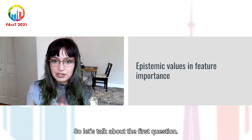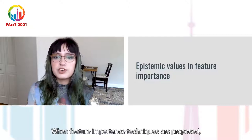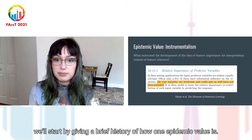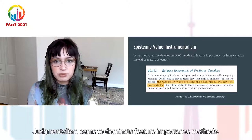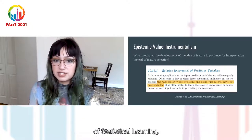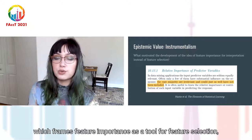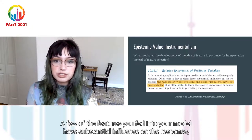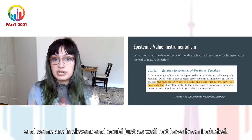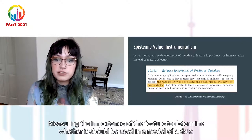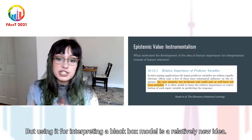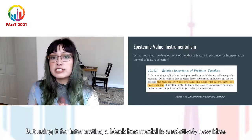So let's talk about the first question: what are the epistemic values at play when feature importance techniques are proposed? We'll start by giving a brief history of how one epistemic value, instrumentalism, came to dominate feature importance methods. Some descriptions of feature importance mirror the framing from the popular book The Elements of Statistical Learning, which frames feature importance as a tool for feature selection — often only a few features have substantial influence on the response, and some are irrelevant. Measuring the importance of a feature to determine whether it should be used in a model is an old statistical idea, but using it for interpreting a black box model is a relatively new idea.